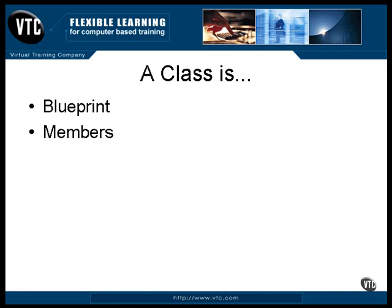When an object is constructed from the class, the things defined in the class that become part of each of the objects are known as members of the object. The members can be the data items that hold the definition of the object, and they can be methods that are used to do things to the data. But remember, they are blueprints for these items — they are made of the instructions for building these things for each object.